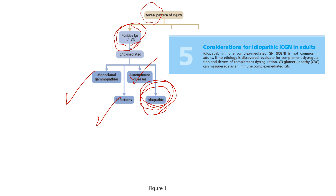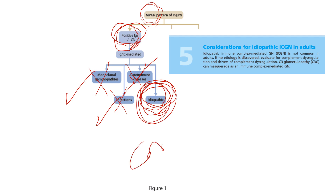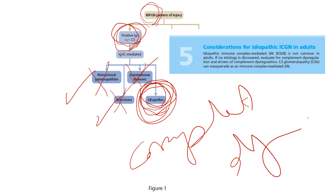Even if you have a patient with MPGN positive for immunoglobulin plus or minus complement and you did not find infection, autoimmune disease, or monoclonal gammopathy as a cause — before considering the patient idiopathic, you must exclude complement dysregulation. This is because complement dysregulation in some situations, especially in C3 glomerulopathy, may appear under the microscope with the same pattern as immunoglobulin immune complex-mediated disease. If no etiology is discovered, evaluate for complement dysregulation and its drivers before labeling it idiopathic MPGN.